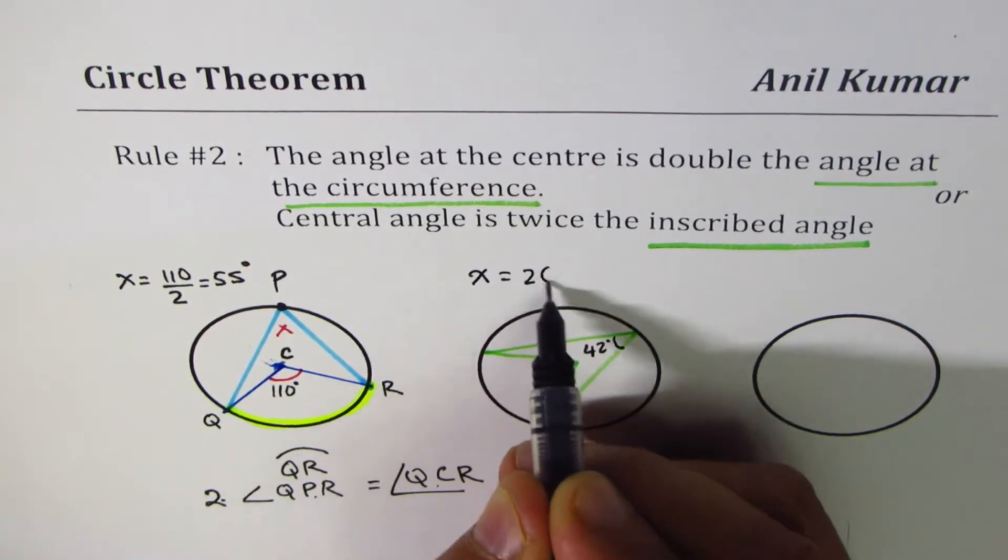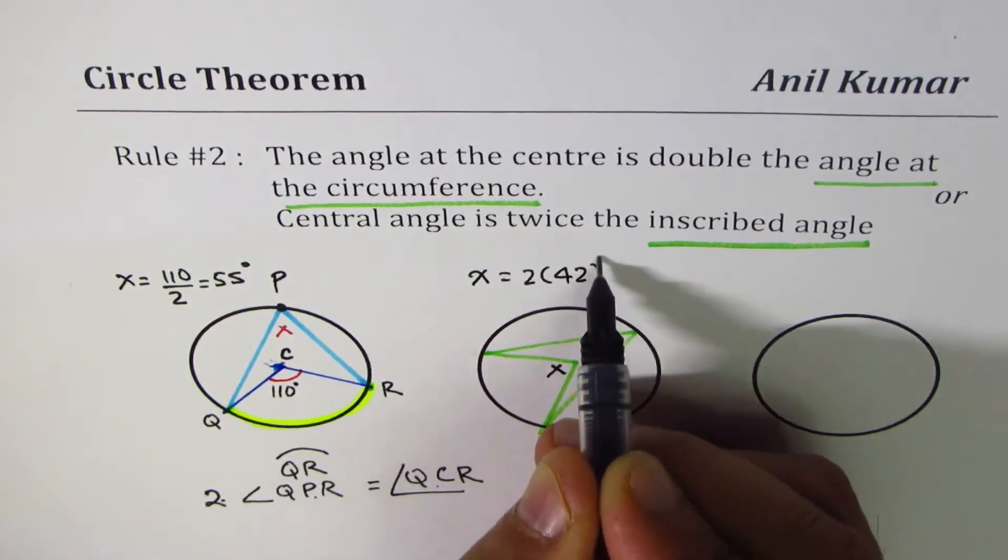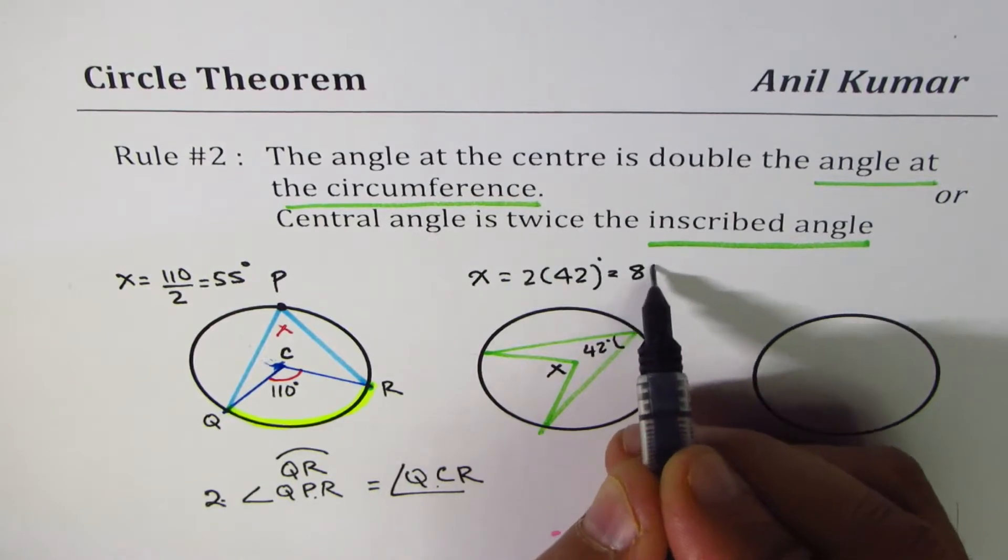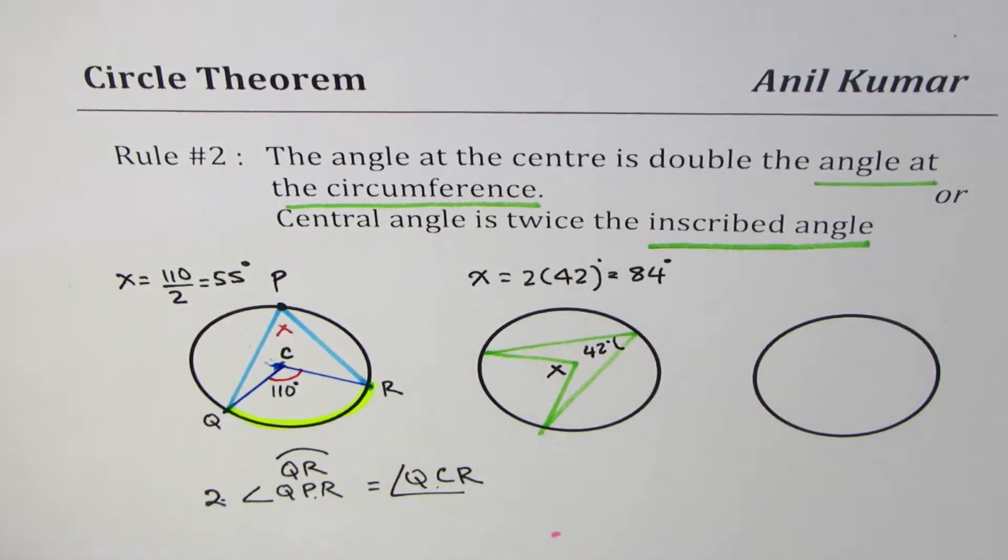X is 2 times 42 degrees, which is 84 degrees. Is that correct?